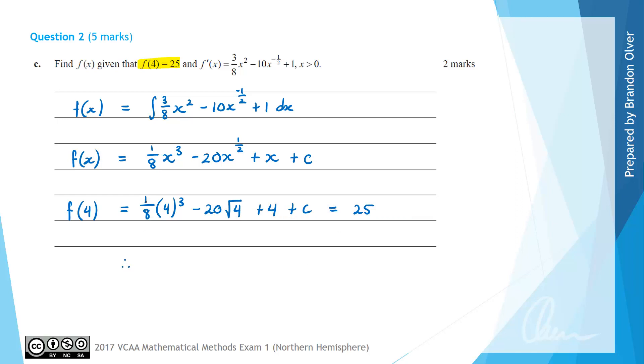Therefore we have 1 on 8 times 4 cubed. 4 cubed is 64 and dividing that by 8 just gives 8. Then minus 20 times 2 because the square root of 4 is 2 gives minus 40. Then we have plus 4 plus c equals 25. And solving that for c we get c equals 53.